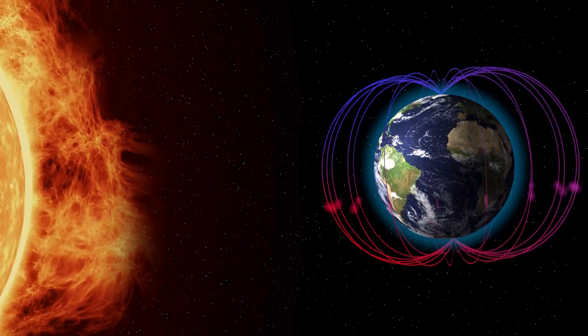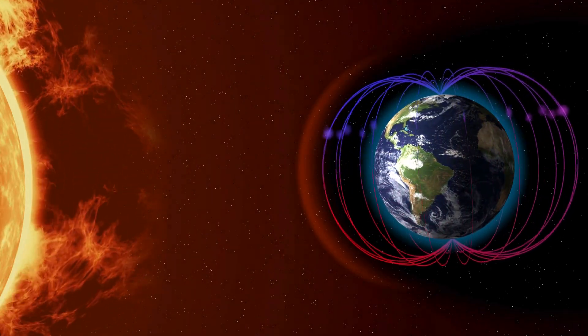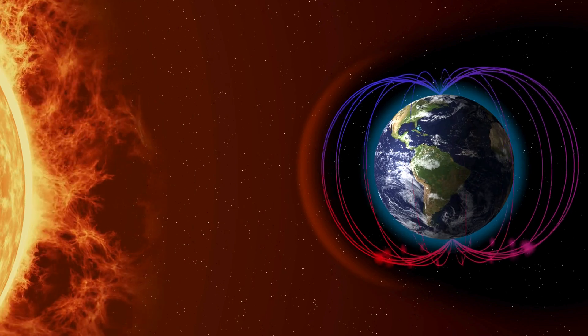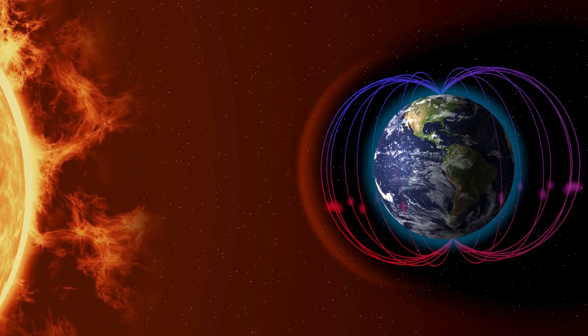By deflecting charged particles from the solar wind, the magnetic field protected the atmosphere from being stripped away. This allowed water vapor to remain, creating the conditions necessary for life to emerge in oceans.